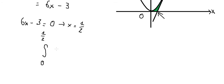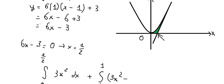So we just have 3x squared. So we have 3x squared plus the integral from 1 over 2 to 1. We got about 3x squared minus the line in here. That's about 6x minus 3.